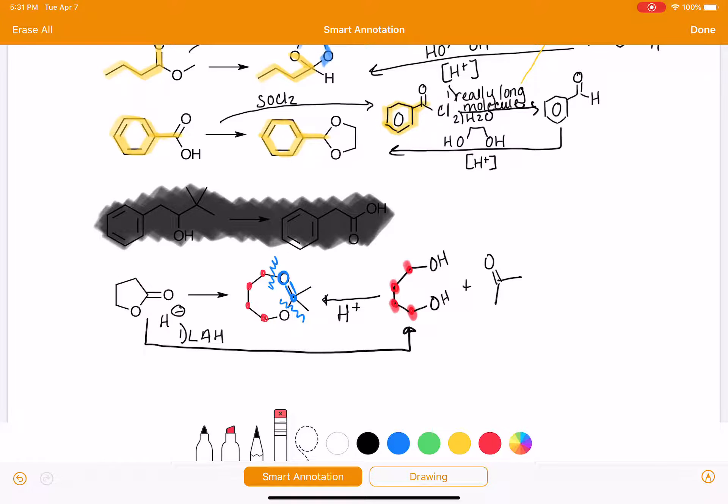If we have a hydride attacking the carbonyl carbon, we're opening up that carbon oxygen double bond. What is it going to look like? It's going to start looking like that. And then the negative charge is going to come back down, and remember, it's going to kick off the leaving group, which is that, breaking that carbon oxygen bond.